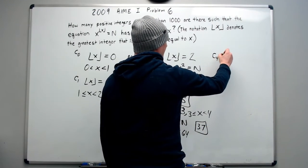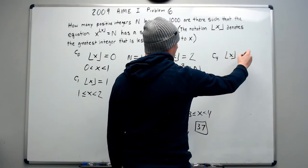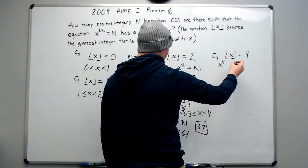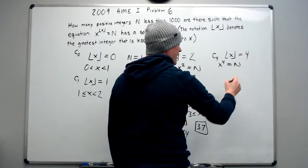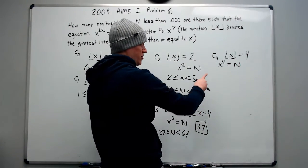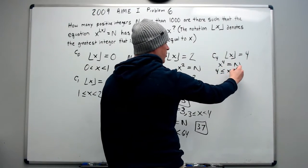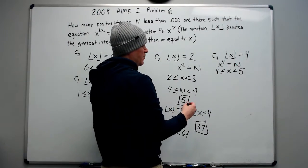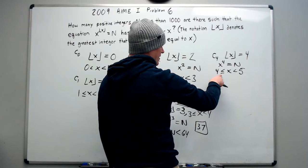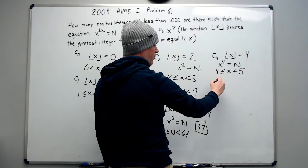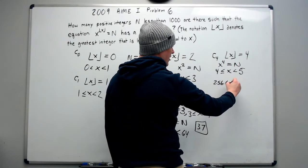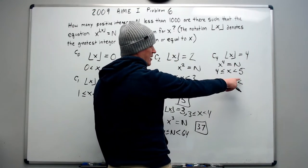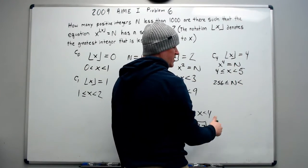This is when the greatest integer less than or equal to x is equal to 3. And so you're going to have x to the third is equal to n. We also know that x is restricted to being greater than or equal to 3 so it can fall down to 3 but less than 4. So then just plug the 3 into here and you will get that n is greater than or equal to 27. And it has to be less than 4 cubed, which is 64. And again, we can just do 64 minus 27 to get 37 ways for this to occur. The last case we need to look at is when the greatest integer less than or equal to x is equal to 4.